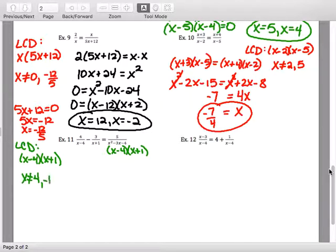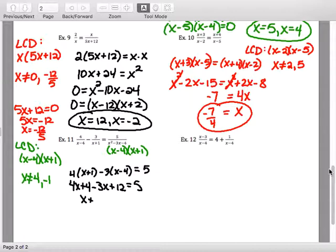So my restrictions are x can't be 4 or negative 1. So if I multiply by the LCD, I'm going to get 4 times x plus 1 minus 3 times x minus 4 equals 5. On the right side, both factors cancel. Again, on the right side, both factors cancel and leave me with just the 5. So this is 4x plus 4 minus 3x plus 12 equals 5. So I'm going to combine like terms and get x plus 16 equals 5. So x is negative 11. I have to check it against my restrictions. So this one's good.